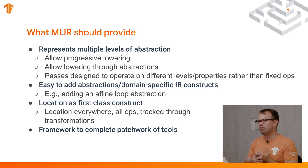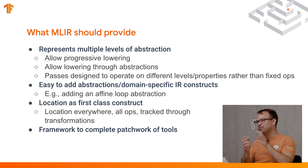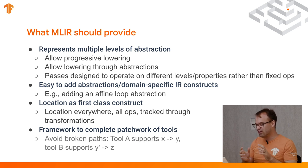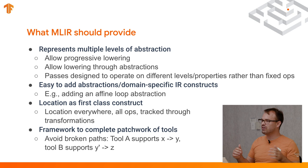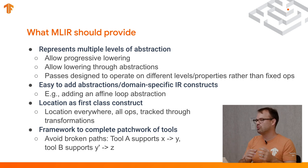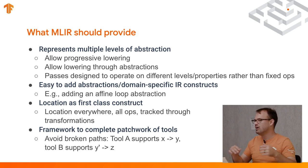Another part we also want to work on is to have this framework enable us to complete the patchwork of tools. At the moment, a couple of users have run into a problem where we have broken paths — you have a tool A that gets you from representation X to Y, and a tool B that gets you from Y prime to Z. But if you actually want to get from X to Z, you have to do something else or restrict your model. We want to try and get a path to complete this patchwork and enable end-to-end workflows of interest.